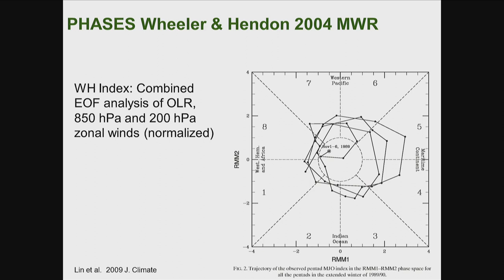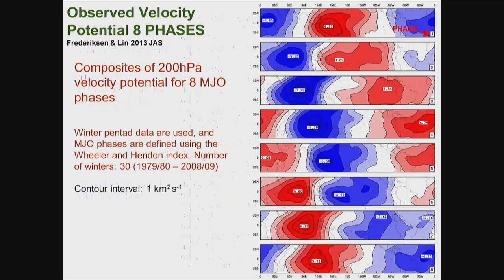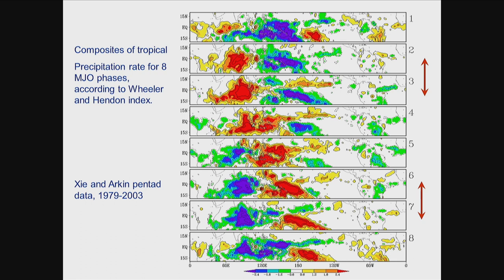This shows the Wheeler-Hendon index in phase space from phase one to phase eight — shown yesterday. This is a composite of precipitation anomaly along the equator from phase one to phase eight. Now we do the same composite for the stream function at 200 millibar. You see this eastward propagation — for example, in phase one there is upper divergence from the Indian Ocean propagating eastward, consistent with the precipitation anomaly.